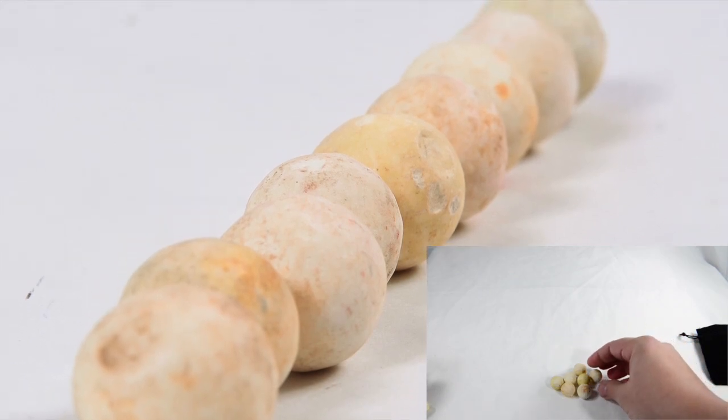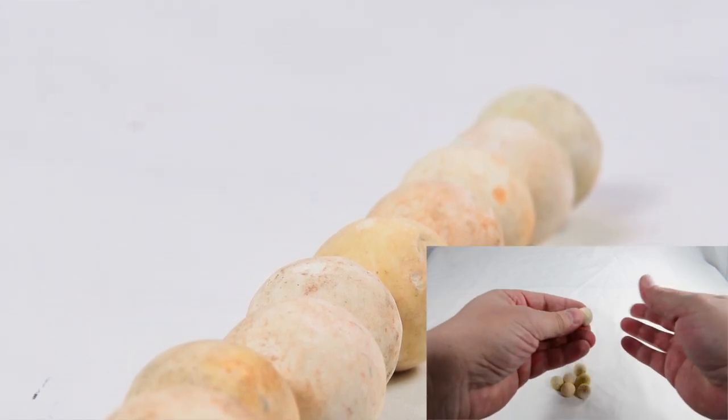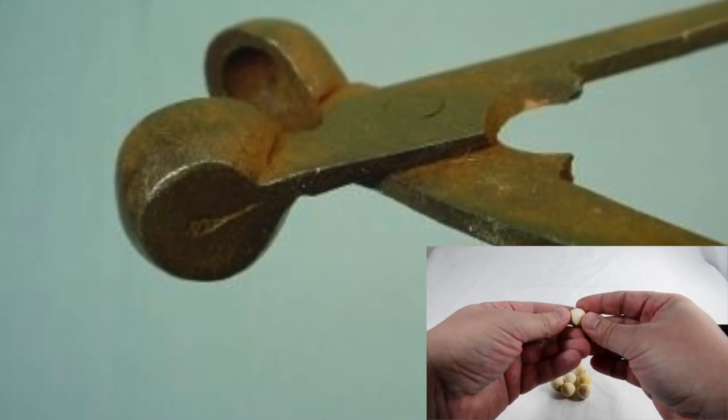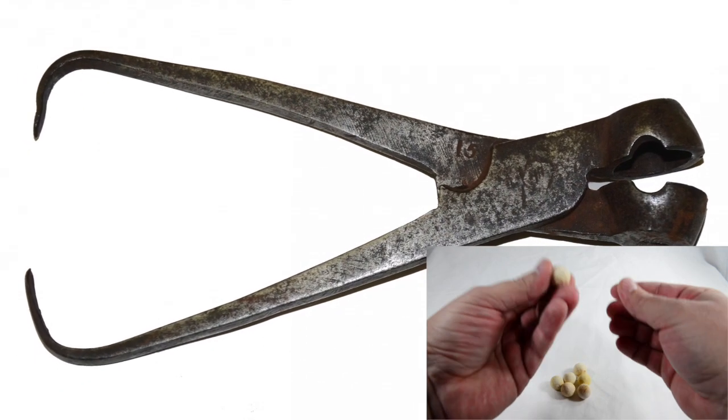Now, these were formed with a bullet mold, as most were during the time. It makes sense. They had it. It made perfectly round items. These are .69 caliber,